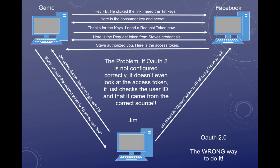Now Jim can do whatever he wants in the game. But this isn't just for games — this is for any site you ever go to that says 'Login with Facebook,' 'Login with Twitter,' whatever. They all use some version of OAuth. So if they're not configured correctly — this would immediately fail if OAuth was correctly set up. If Jim broke in and changed the credentials, and Facebook said 'Steve authorized you, here's the access token,' the game should say, 'Nope, sorry, they don't match — that's supposed to be Jim's access token, you got Steve's,' and you'd get a failure.